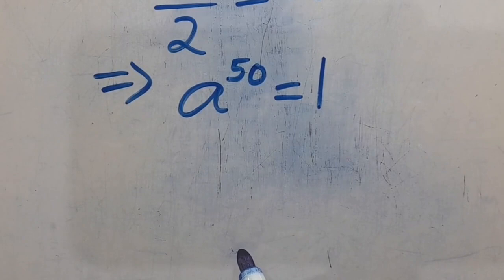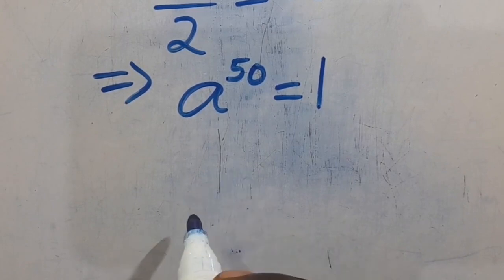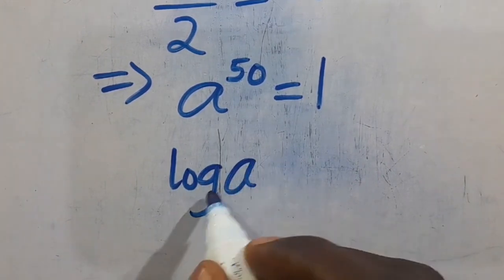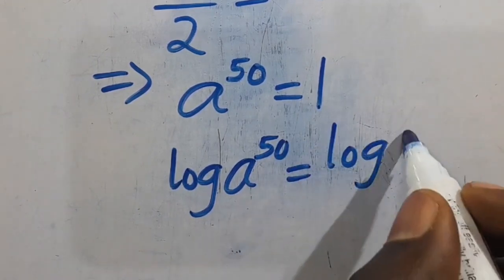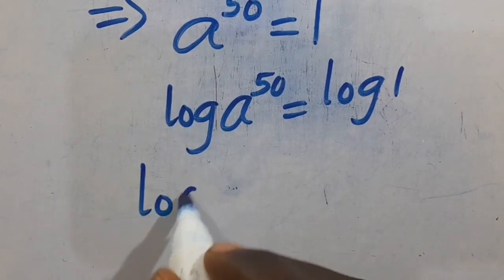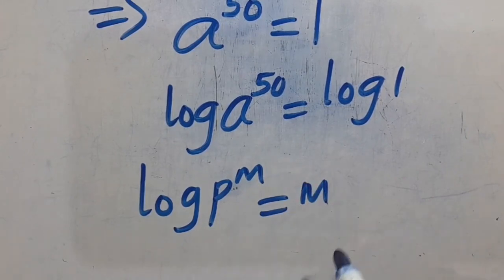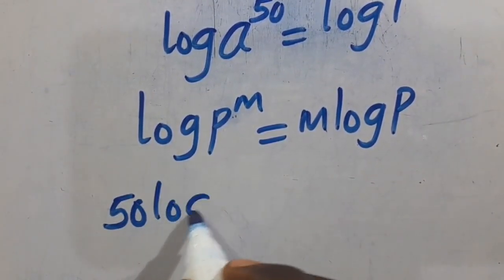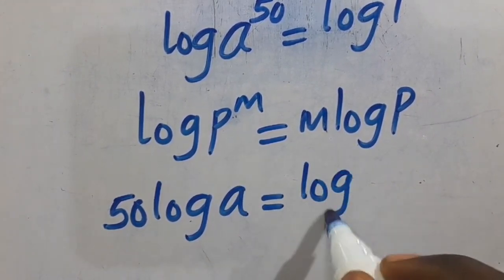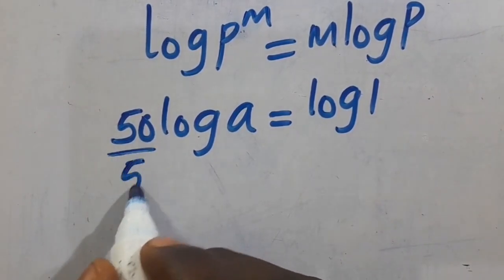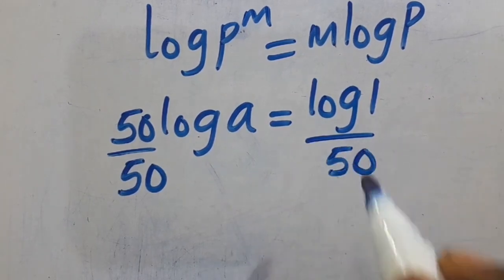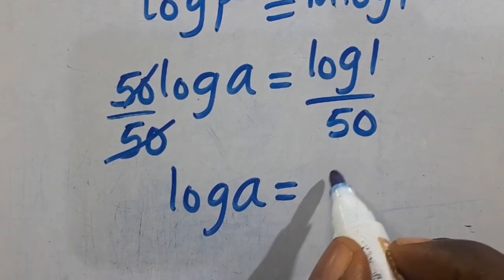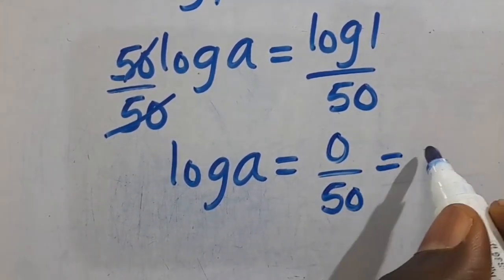So from here, let's introduce log to both sides: log of A to the power of 50 equals log of 1. Remember that when you have log of P to the power of M, the power M comes down and multiplies log of P. So we have 50 multiplied by log A equals log 1. Dividing both sides by 50, we have log A equals log 1 over 50. Since log 1 equals 0, this gives us log A equals 0.